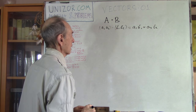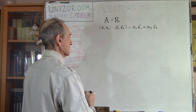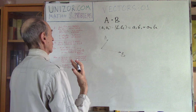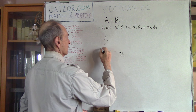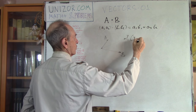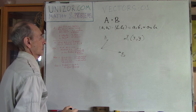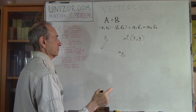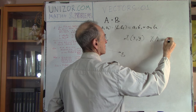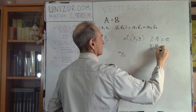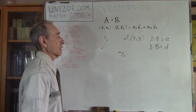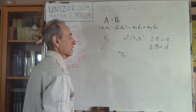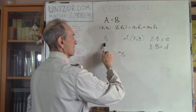Here is the problem. I present it in the two-dimensional case. You have two vectors A and B. You have to find a vector X with coordinates x and y — or x1 and x2 — such that its dot product with A equals a given number C, and its dot product with B equals another given number D.